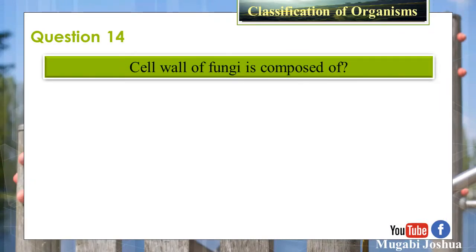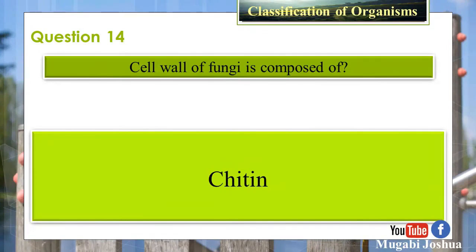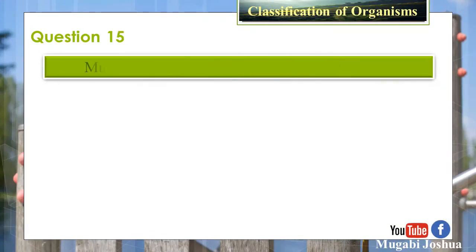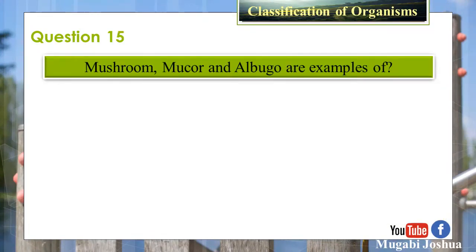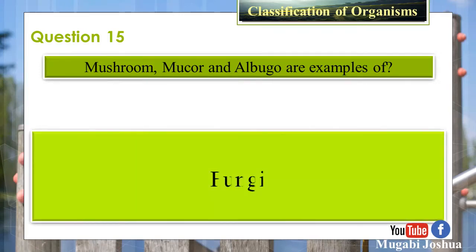Question 14: The cell wall of Fungi is composed of? Answer: Chitin. Question 15: Mushroom, Mucor, and Albugo are examples of? Answer: Fungi.